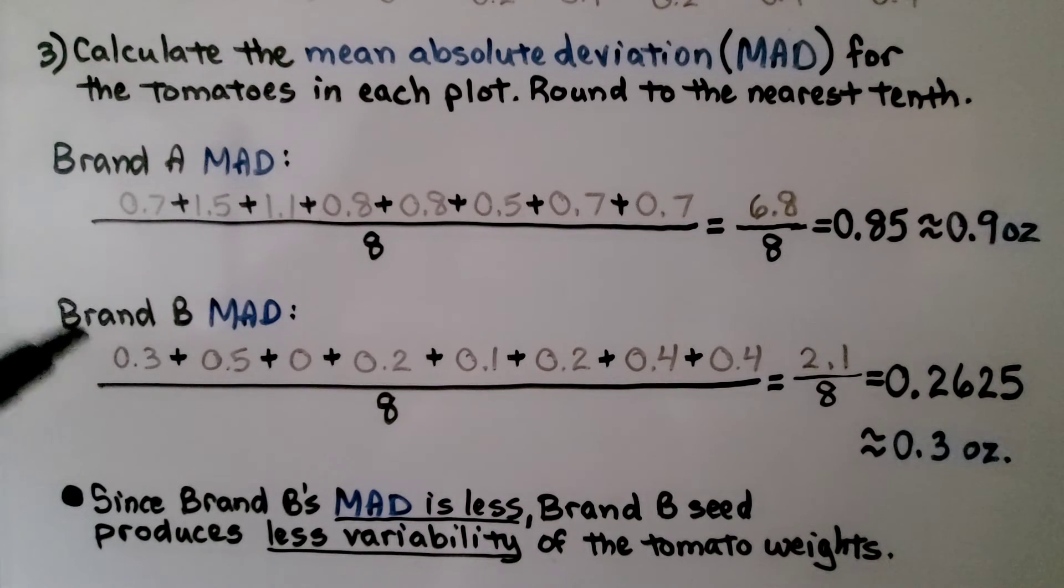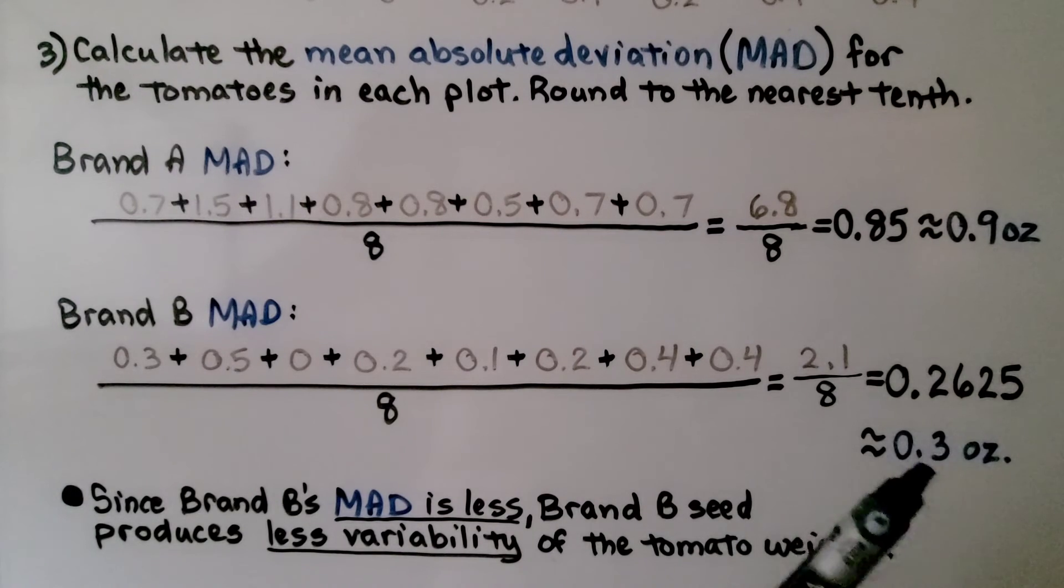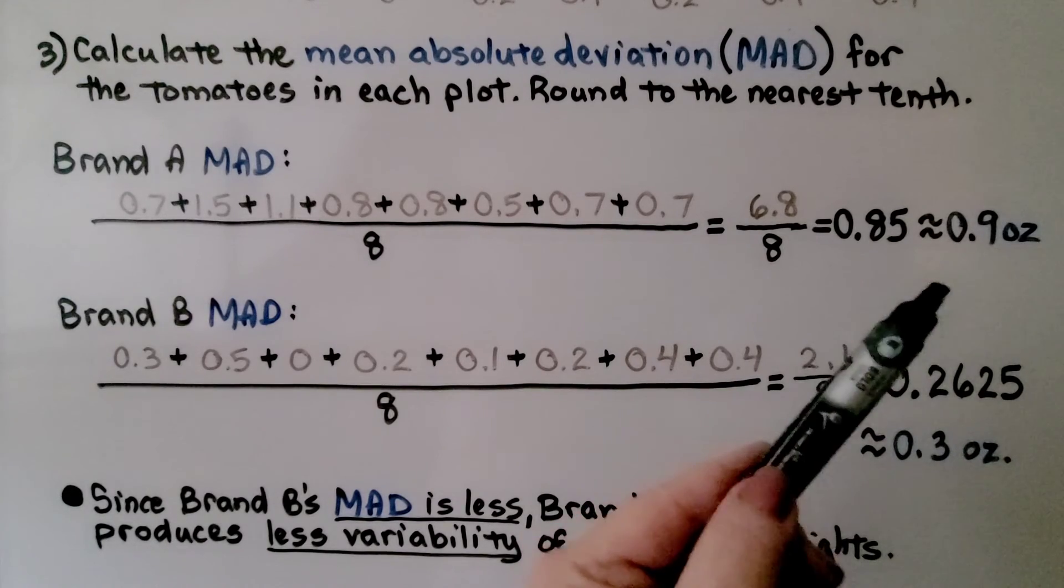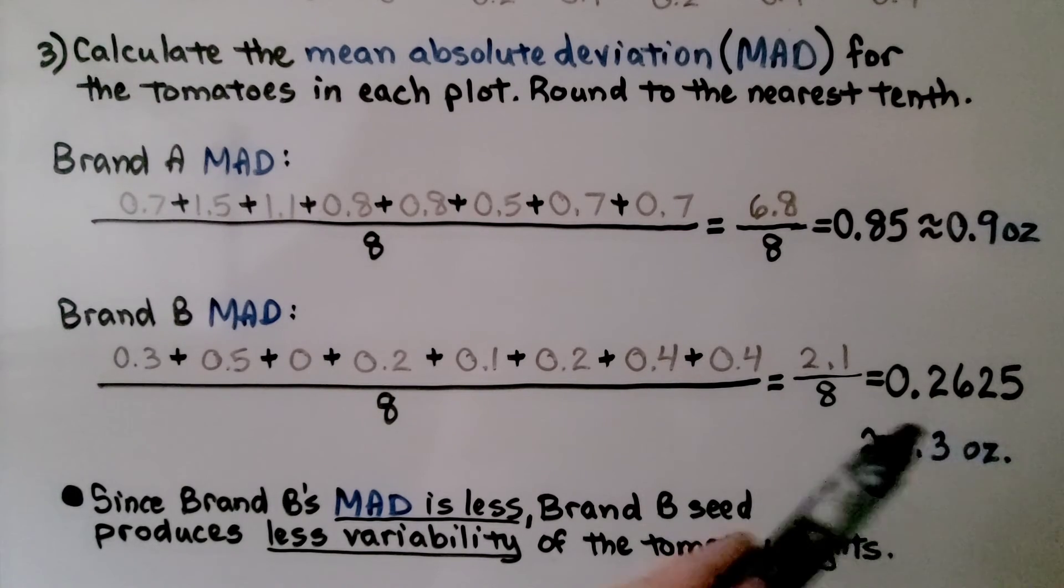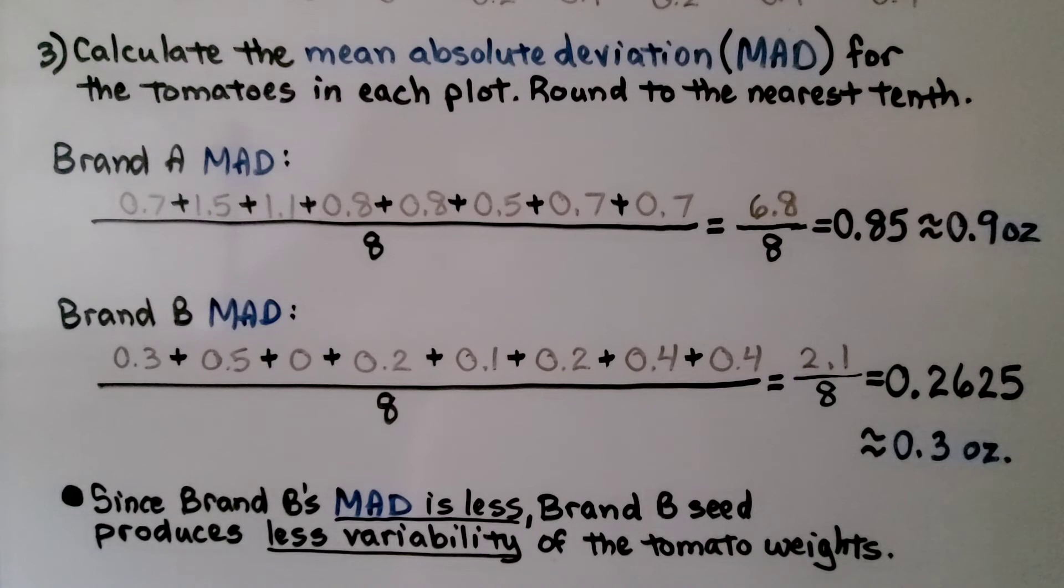So since brand B's MAD is less, it's only 3 tenths of an ounce, brand B's seed produces less variability of the tomato weights. This is saying they differ in weight about 3 tenths of an ounce, where these differ in weight about 9 tenths of an ounce. So these tomatoes are almost all the same weight when they're ripe. So if the gardener wants to grow tomatoes that are about the same weight when they're ripe, he should go with brand B.